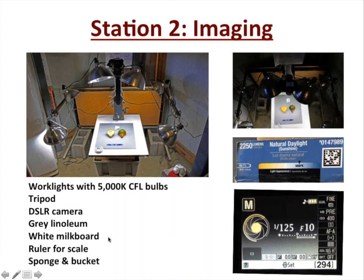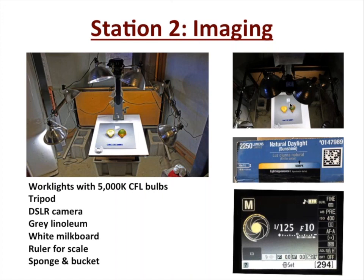We have a little ruler for internal scale and a sponge bucket to wipe down between squash. You can see in the overhead view that the photographer sees: there's the ruler for scale, the squash — one face up, one face down — so you can see the rind and also the internal things, the flesh color, and the seed cavity. You can also see the barcodes that have traveled with it as the internal label.